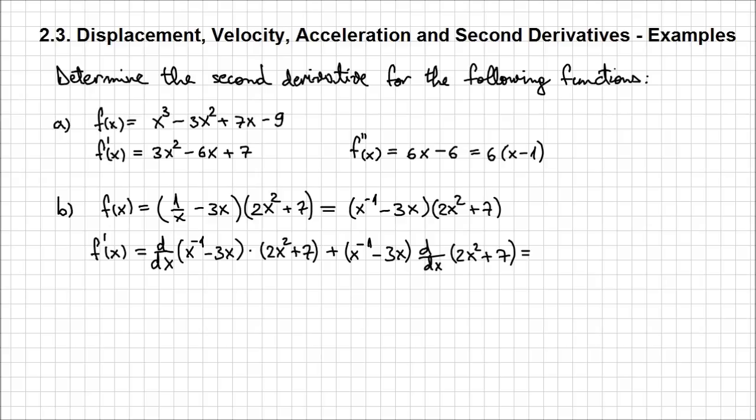Now we can calculate the derivatives of these two expressions above. And we're going to have, the derivative of x^(-1) is going to be -x^(-2) - 3, because that's what the derivative of 3x is, times the expression 2x² + 7, plus x^(-1) - 3x times the derivative of 2x² + 7, which is going to be 4x.